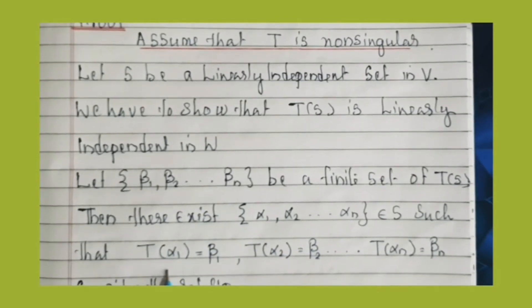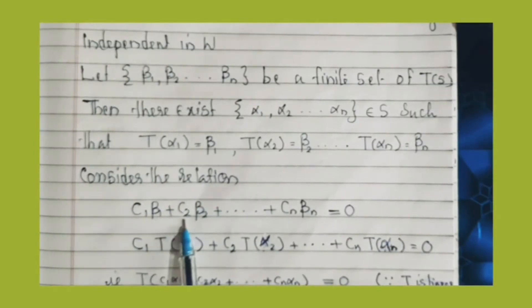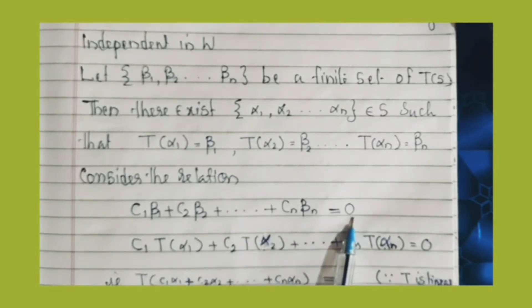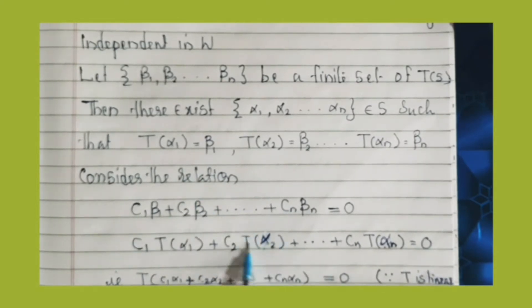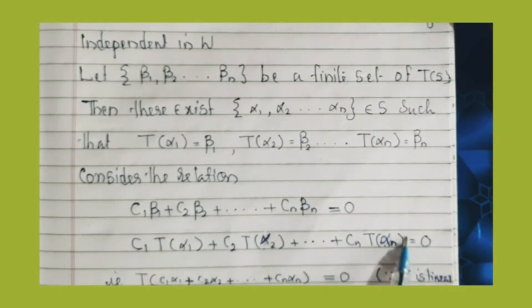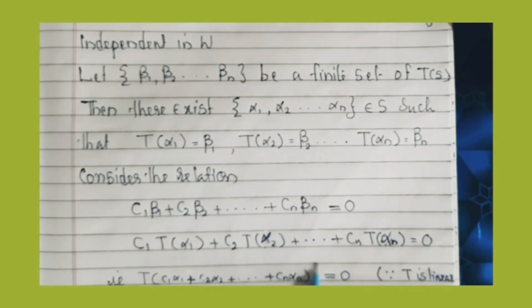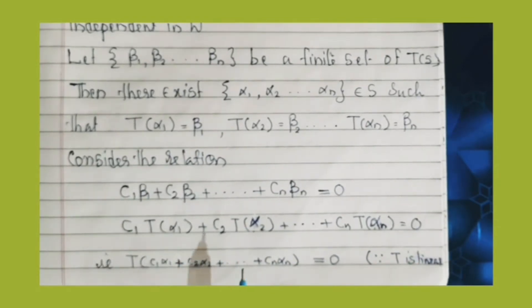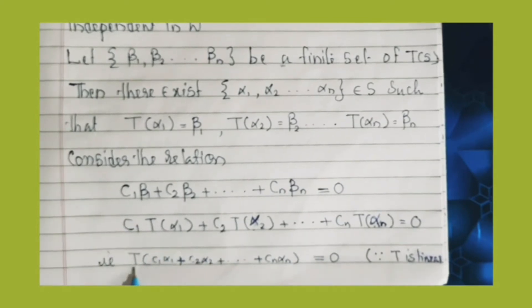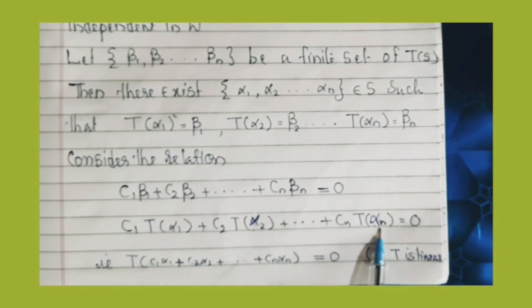So we write T(α₁) = β₁, T(α₂) = β₂, ..., T(αₙ) = βₙ. Next, consider the relation c₁β₁ + c₂β₂ + ... + cₙβₙ = 0. Substituting, we write c₁T(α₁) + c₂T(α₂) + ... + cₙT(αₙ) = 0. Since T is a linear transformation, we get c₁α₁ + c₂α₂ + ... + cₙαₙ = 0.